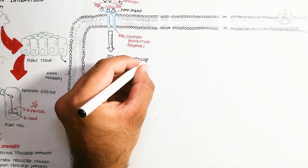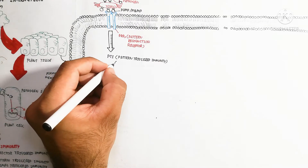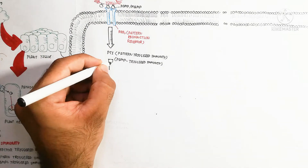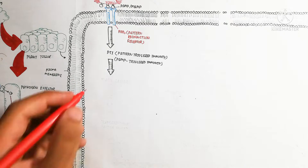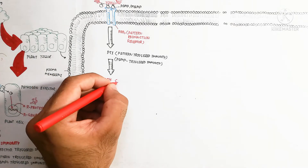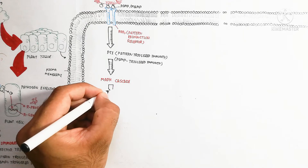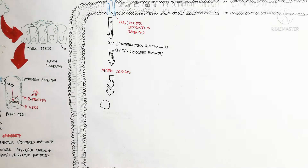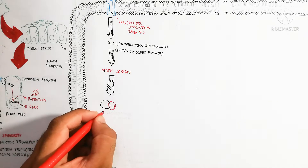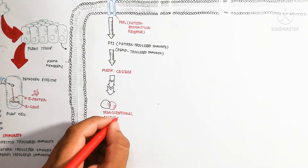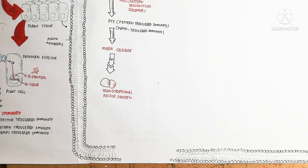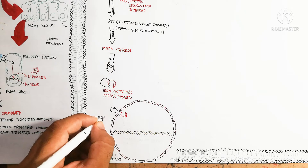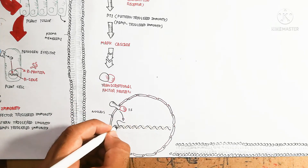When PAMP binds with the PRR, PTI (pattern-triggered immunity) is triggered. This gives a response via the MAPK cascade. The MAPK cascade creates transcriptional factor proteins — the second messenger, where the pathogen is the first messenger. We will not discuss the MAPK cascade mechanism in detail in this video, but it will be covered in the next video.